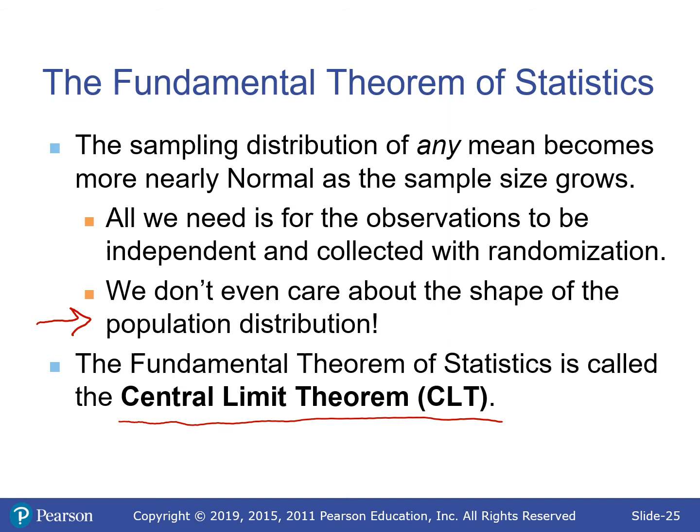The phrase to write on the AP test is: 'Since the observations were independent and random and the sample size is large enough, this distribution will be approximately normal by the CLT.' That is important — it can save you points even if you're not entirely sure about everything else.